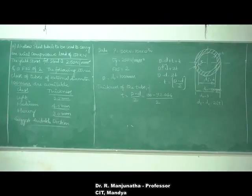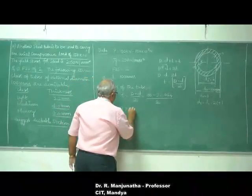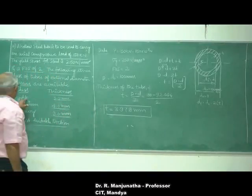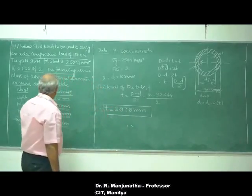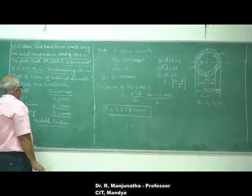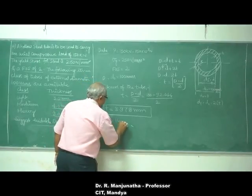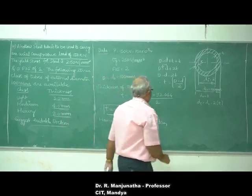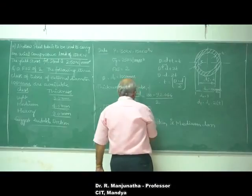The thickness of the tube is 3.978 mm. Now we need to suggest which category this falls into. It cannot be the light class since light is 3.5 mm and 3.978 mm is greater. The medium class is 4.0 mm, and 3.978 mm is just below that, so the tube lies in the medium category. Hence the suggested section is medium class.